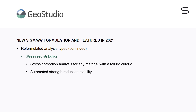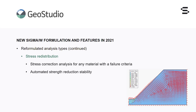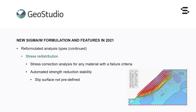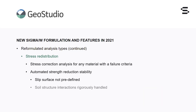Automated strength reduction stability has been added to Sigma W. This method is advantageous because the shape of the slip surface does not have to be presupposed, and the deformation patterns are naturally revealed in the analysis. Soil-structure interactions are rigorously and intuitively handled, and complex soil behaviour is automatically captured.